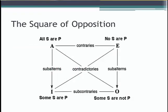Here's the square of opposition, showing the relationship between the four standard types of propositions: the A, the E, the I, and the O claims. The top two claims, the A and the E claims, are universal claims because they say something about all members of their subject categories.